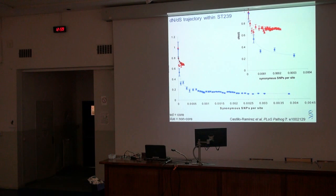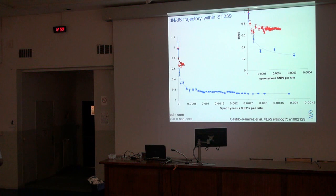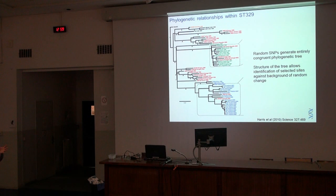This means you can't use standard dN/dS measures to infer selection, because as mutations occur, selection is not yet acting. Most of those 4,500 SNPs are essentially random noise. So how do you pick out the interesting signatures of selection from that background noise?